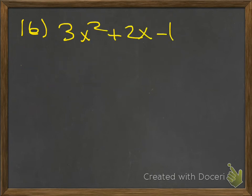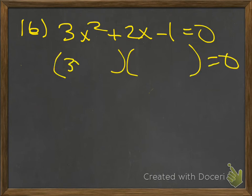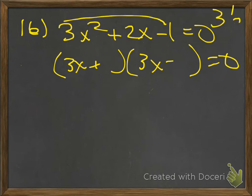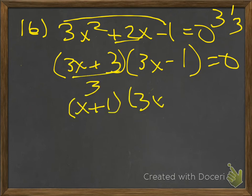Number 16: 3x squared plus 2x minus 1 equals 0. Plus minus means plus and minus. Since there's a 3 in front of x squared, put 3x in both parentheses. 3 times 1 is 3; factors of 3 are 1 and 3, which subtract to give 2. Divide out the extra 3, so you have (x + 1)(3x − 1). Solving gives negative 1 and positive 1/3.